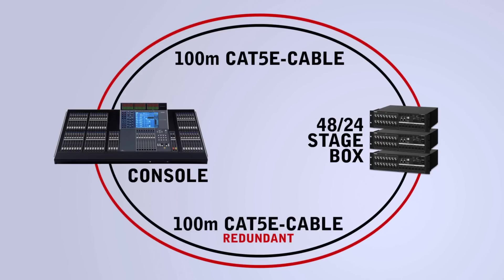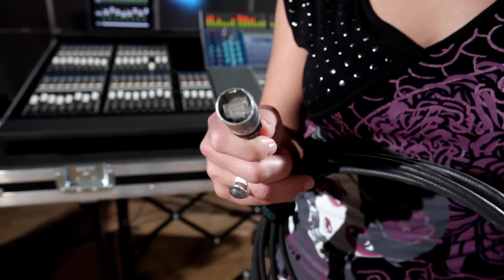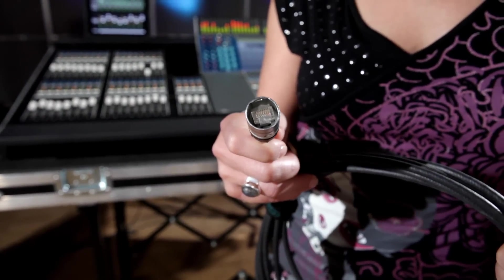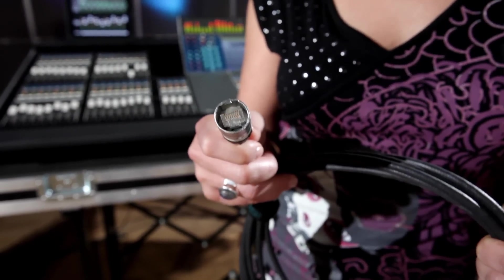A further CAT5 cable can be connected to make a redundant ring, and rugged Neutrik connectors can be used. Generic Ethernet to fiber optic converters can be used to increase the cable distance to several kilometers.